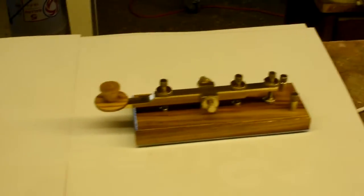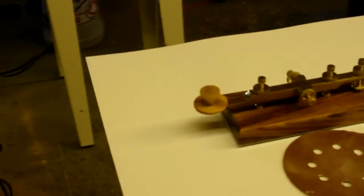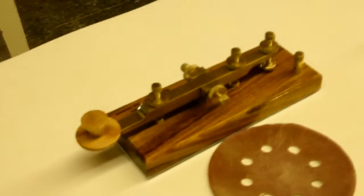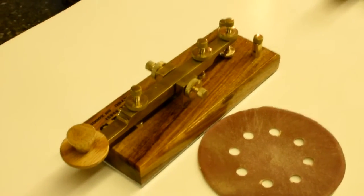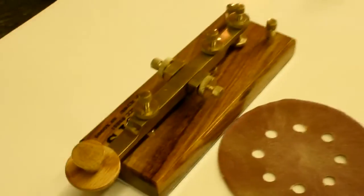So the knobs are made out of oak. I machined those on my lathe. The base is some kind of hardwood I had here in the shop. I don't know what kind it is, but it's really pretty I think. I got about five coats of polyurethane on the base and the knob, so it should last a while.